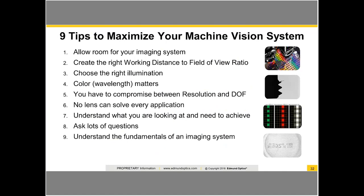Let me give you a quick review. Allow room for your system. Have a good ratio of field of view to working distance—two to four times the working distance relative to field of view. If you're looking at a 100 millimeter field of view, you want a 200 to 400 millimeter working distance for the highest performing product at the best price. Choosing the right illumination color can go a long way, taking a marginally working system and making it work really well. You have to compromise between resolution and depth of field—it's impossible to get the highest resolution everywhere all the time. No one lens solves everything. Understand what you're trying to achieve, ask those questions, and come in knowing the fundamentals. Thank you very much for your time.